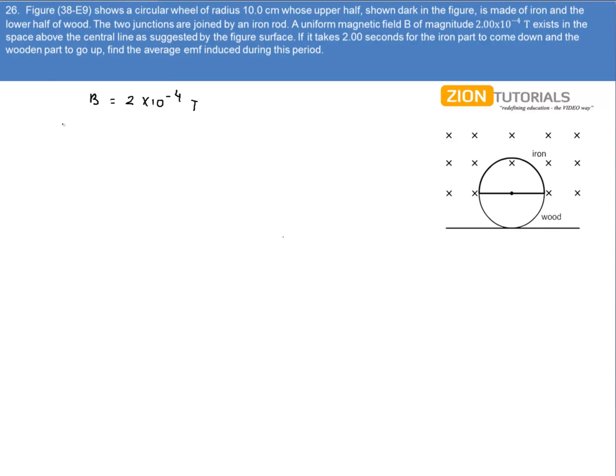Calculating the flux initially, that is when the iron part is in the magnetic field, we have flux as B into area. So magnetic field is 2 into 10 to the power minus 4, and area will be pi r square divided by 2.